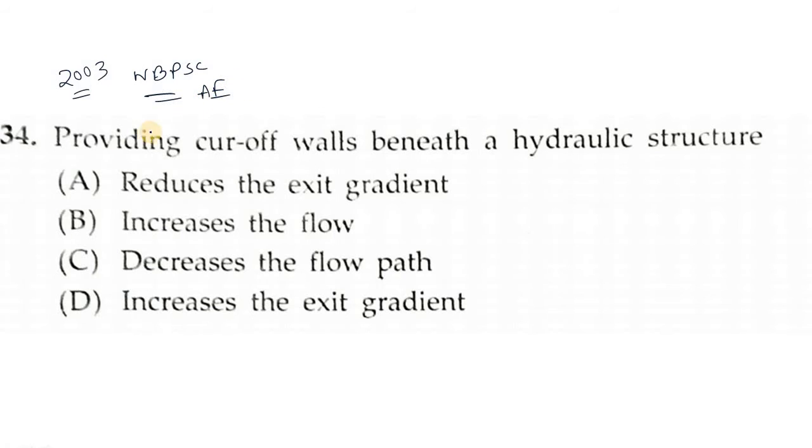Let's start. Providing cut-off walls beneath a hydraulic structure reduces the exit gradient. If this is the hydraulic structure, let's say this is a dam with upstream and downstream water levels. If you provide a cutoff wall like this, the water has to percolate through a longer path, and due to this long path, the head is reduced and the hydraulic gradient is also reduced.